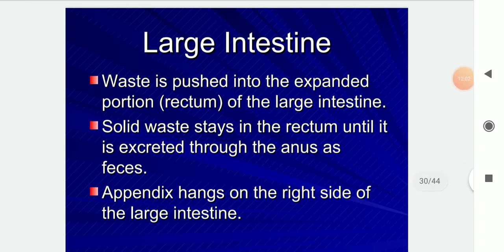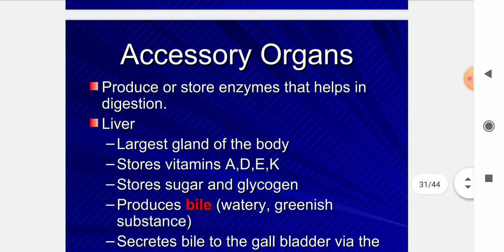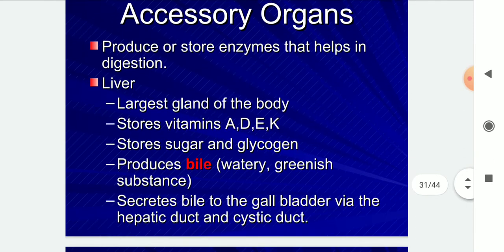Waste is pushed into the expanded portion of the large intestine. Accessory organs produce or store enzymes that help in digestion. The liver is the largest gland of the body — it stores vitamins A, D, E, and K, stores sugar as glycogen, and produces bile, a greenish substance. Bile is secreted to the gallbladder through the hepatic duct and cystic duct.